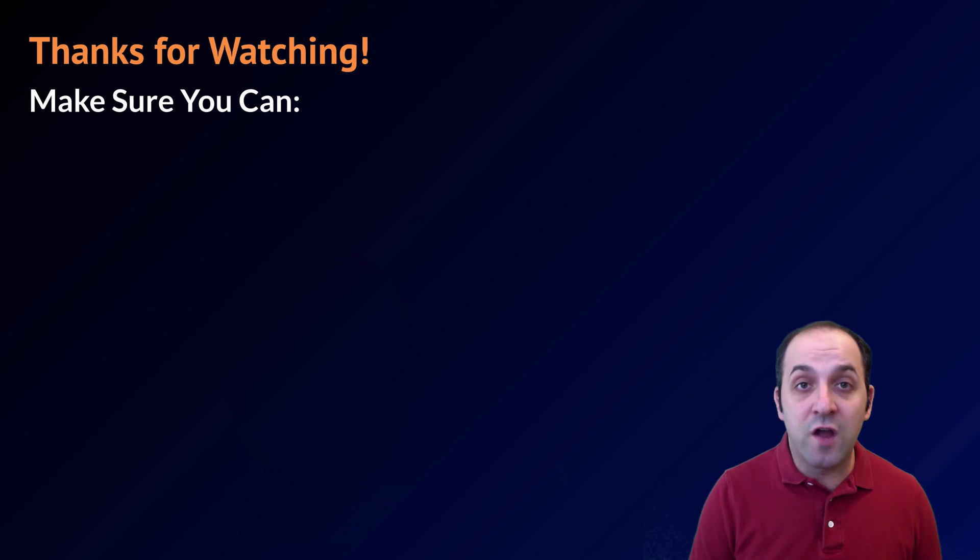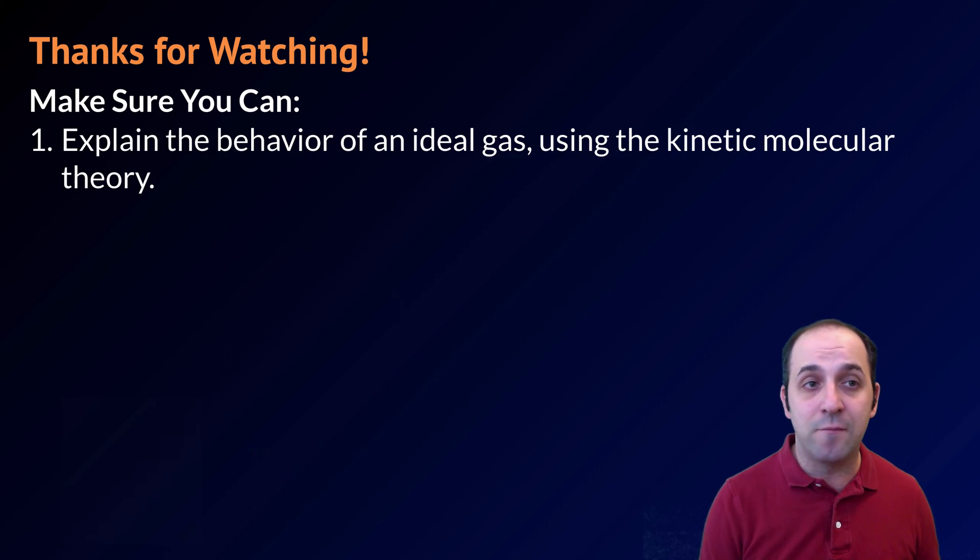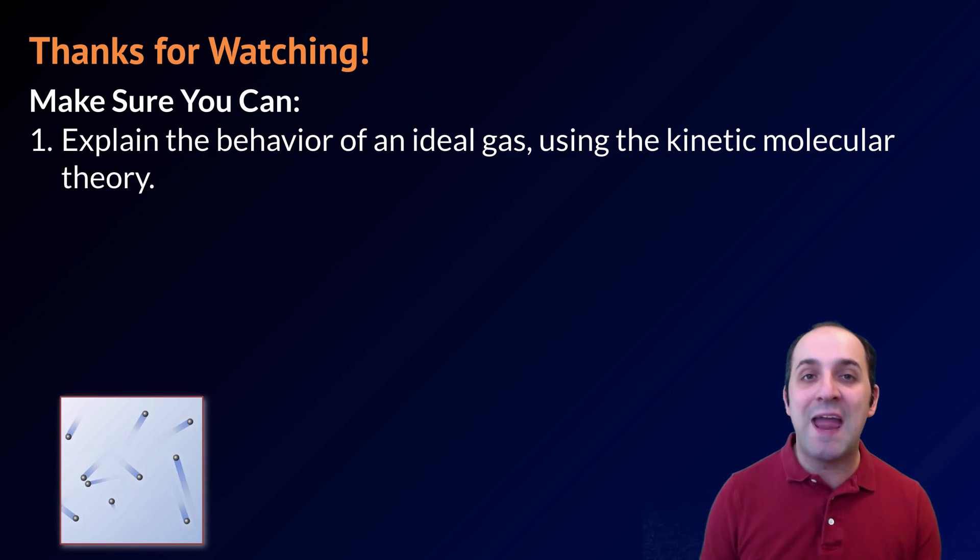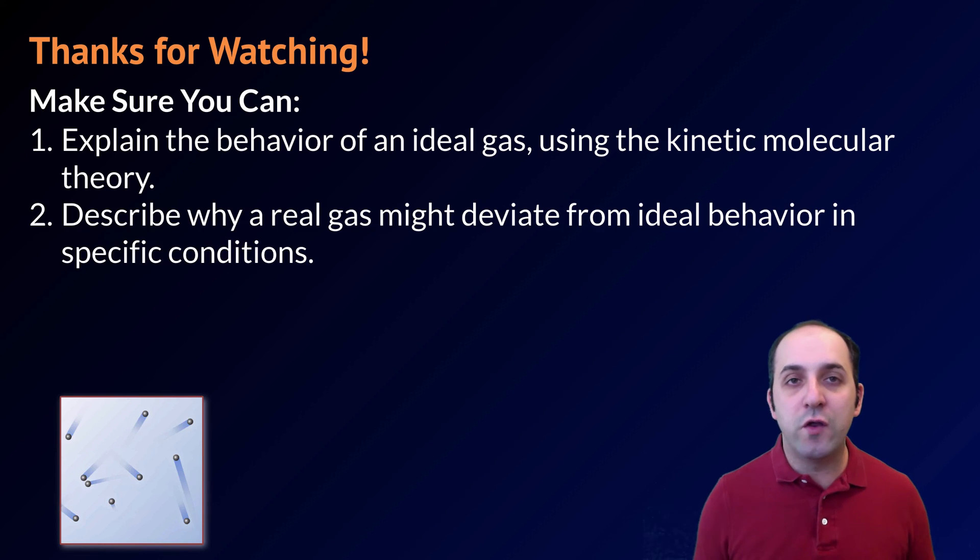Thanks for watching our discussion of ideal gases and our little diversion into pressure and how it works. Make sure that you can do the following here at the end of this lesson. Make sure that you can explain the behavior of an ideal gas using kinetic molecular theory. Also make sure that you can describe when a particular real gas could deviate from ideal behavior in specific conditions of temperature and pressure.